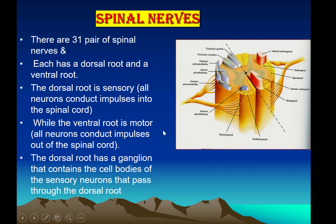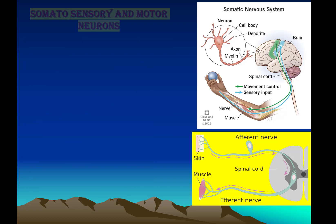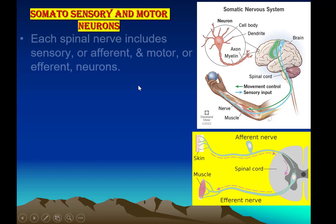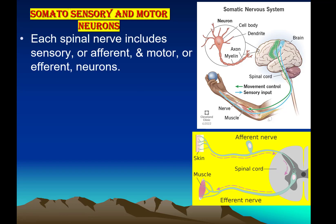Here we have a swelling or tuberosity in which the cell bodies of the sensory neurons are located. Each spinal nerve includes sensory, or afferent, and motor, or efferent, neurons. Afferent means which enter the spinal cord, and efferent means which bring information away from the spinal cord. So afferent is sensory and efferent is motor.